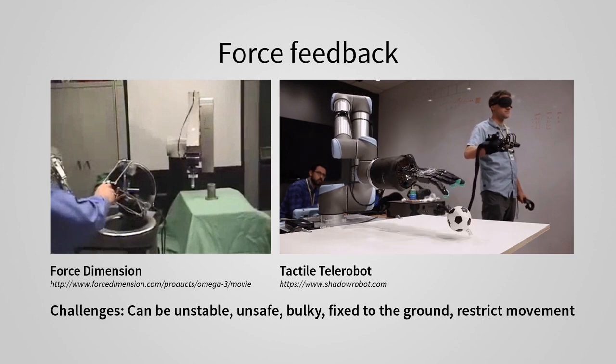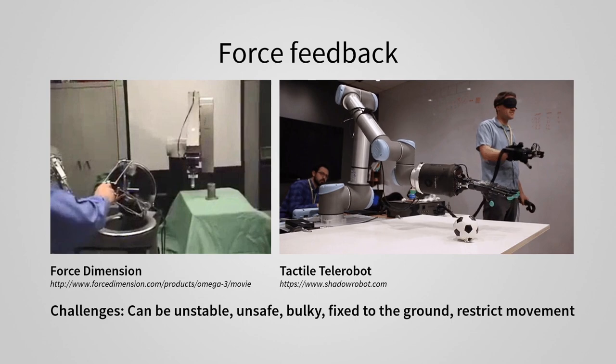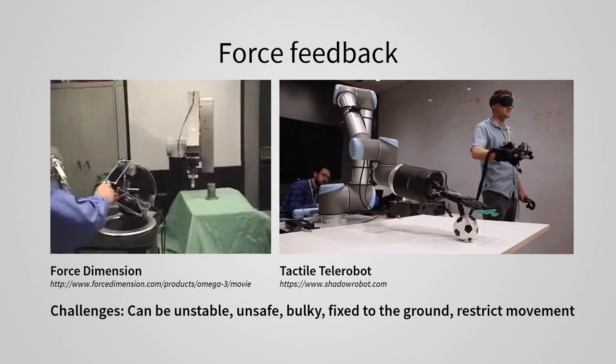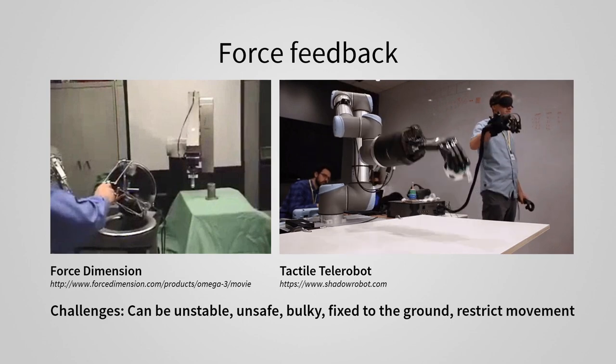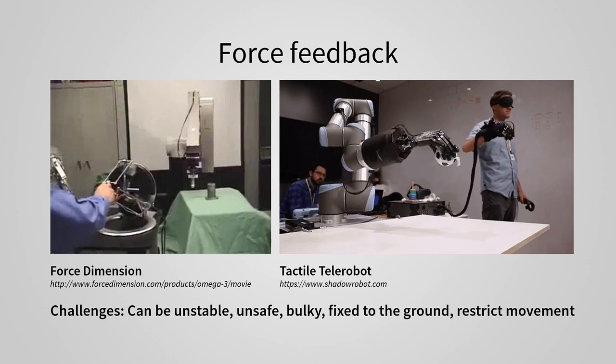Sometimes, the force feedback can be unstable and result in unsafe operation. They can also be bulky or fixed to the ground, and thus restrict the user's natural range of motion. Can we use an alternate complementary approach to convey such force information?